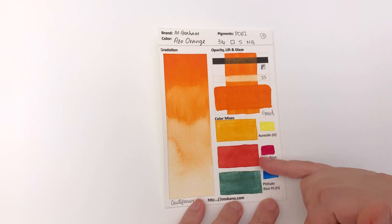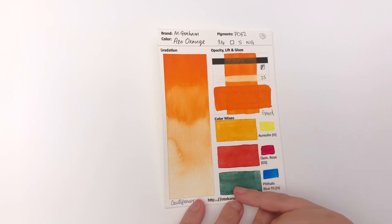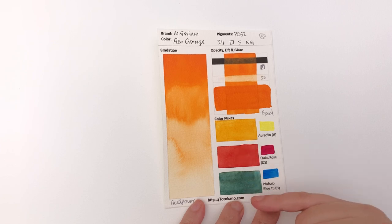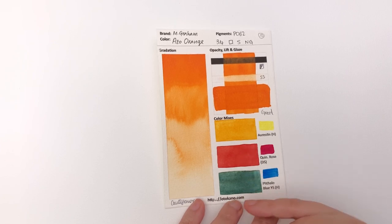You get nice strong color mixes here. You start to get corally pink here, orange here and then like a turquoisey winter kind of green. I think this is a beautiful color to mix with.